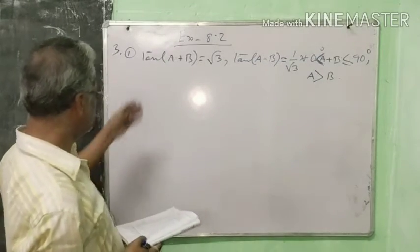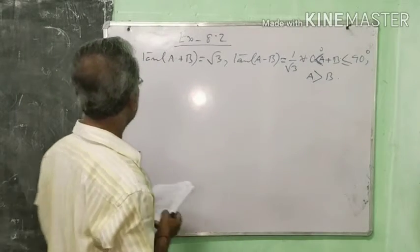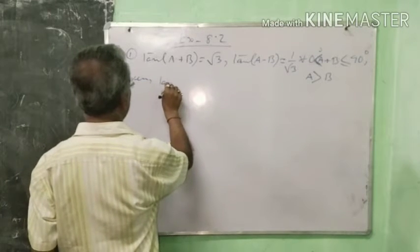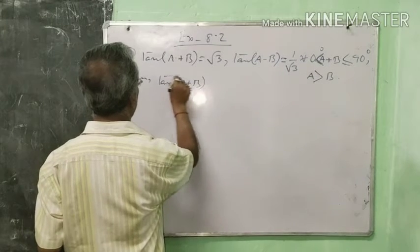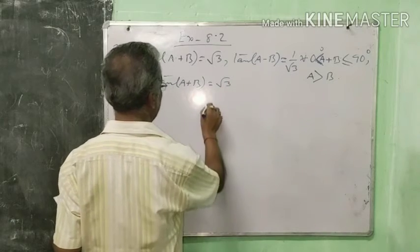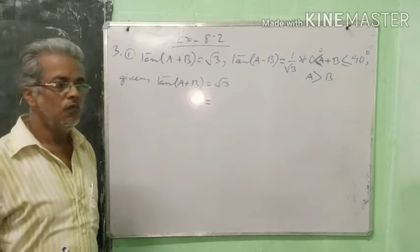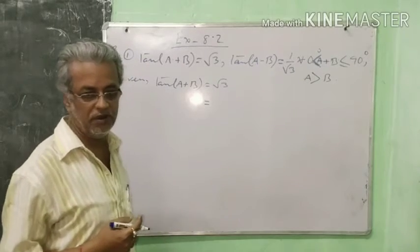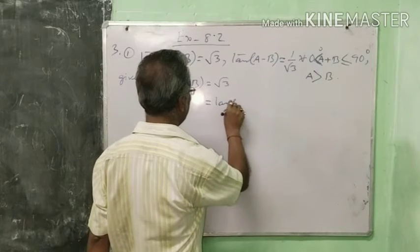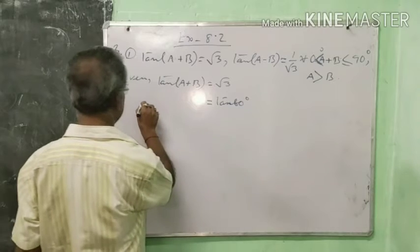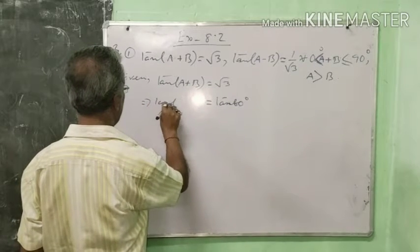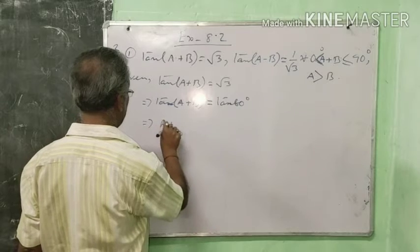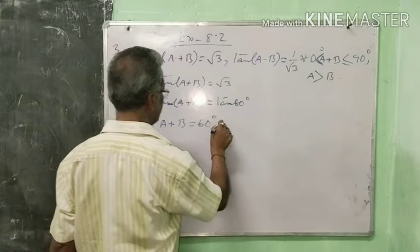Here two equations are given. The first one is tan(A+B) equals root 3. Now, which standard angle of tan has the value root 3? It is 60 degrees. So we write tan 60 degrees, which means A+B is equal to 60 degrees. This is equation number 1.